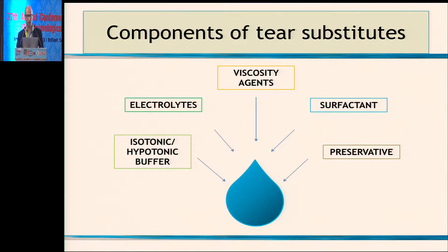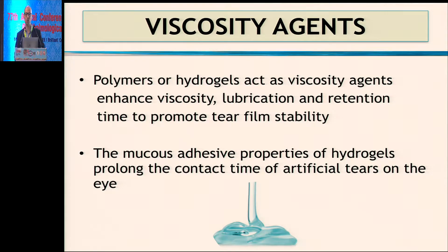Any tear substitute has these ingredients: the main agent is the viscosity agent, plus an isotonic or hypotonic buffer, electrolytes, surfactant, and preservative. Traditionally we only had preserved tears, but now we have preservative-free options. When dosing very frequently, preservatives can cause toxicity — if dosing three or four times it may not matter much, but at hourly or half-hourly dosing it really comes into play, especially if the ocular surface is already compromised. The viscosity agent enhances viscosity, provides lubrication, and contributes to retention time to promote tear film stability.